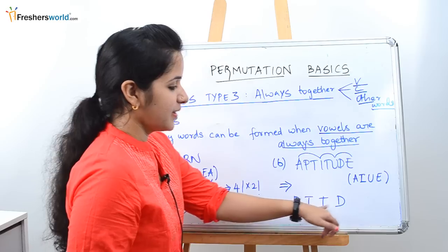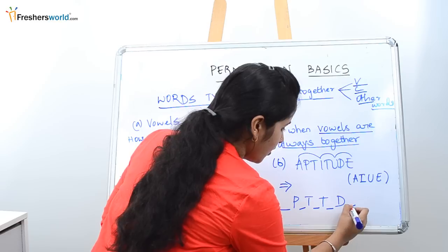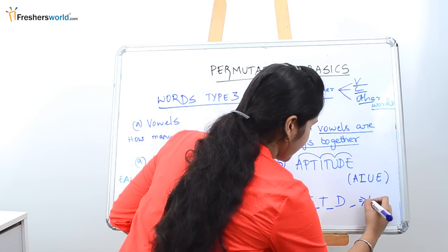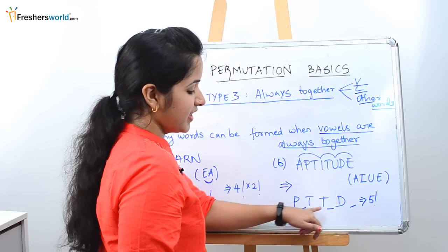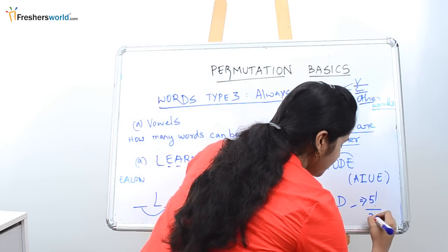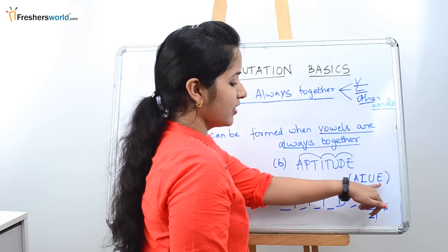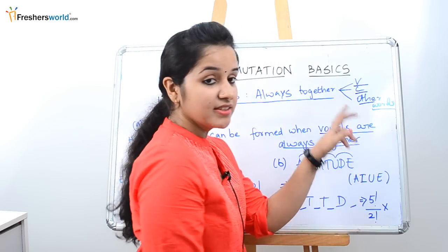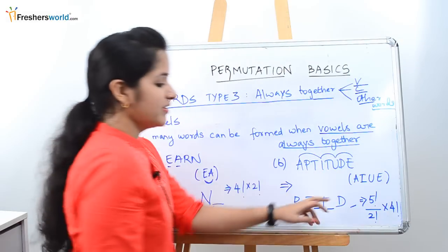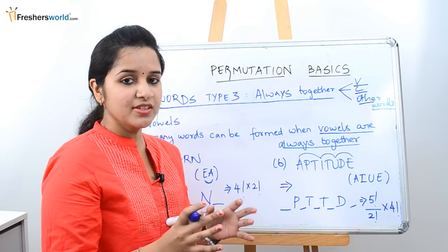What are the places the vowels can be arranged together? They can be in the front, between these, between these, between here, or in the last. So there are five spaces — 5 factorial ways. In this, you can see T is repeated twice, so as we did in previous videos, we divide by 2 factorial. There are four vowels, and how many ways can they be arranged within themselves? It is 4 factorial. So once you solve this — 5 factorial divided by 2 factorial, into 4 factorial — you will know how many ways the word APTITUDE can be arranged when the vowels are always together.